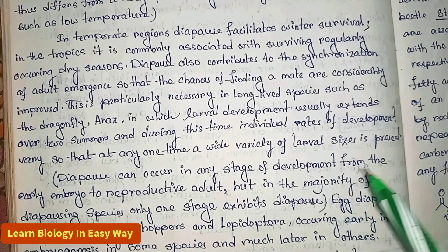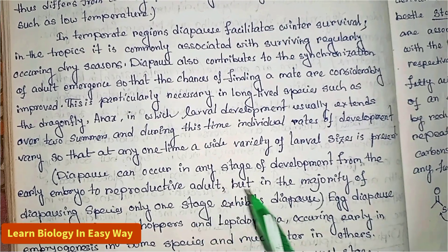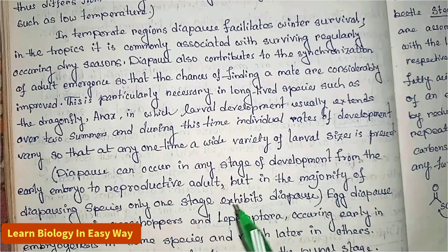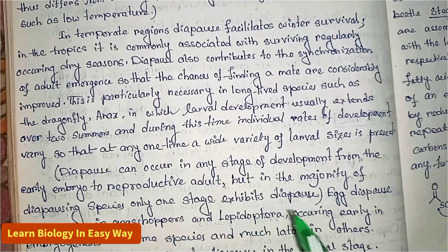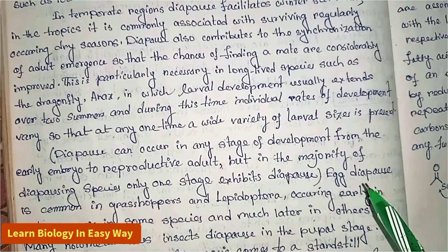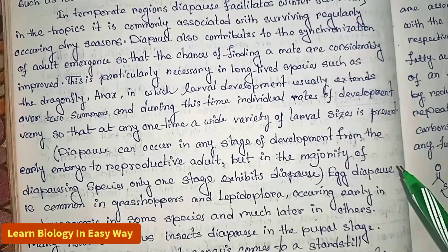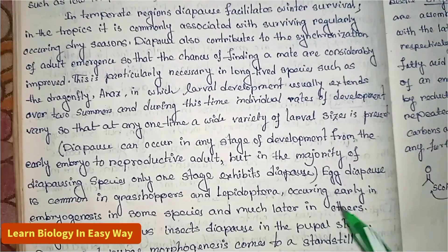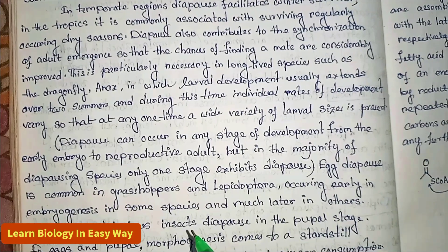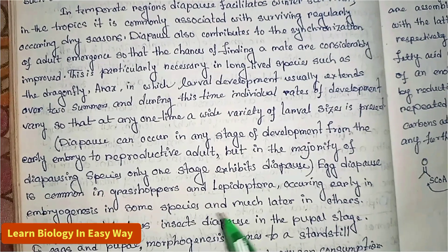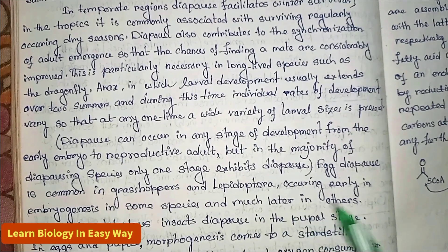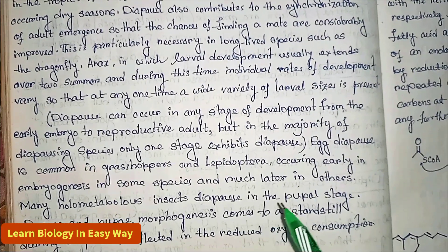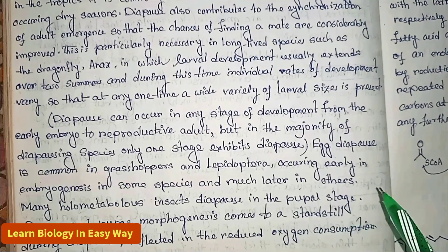In the majority of diapausing species, only one stage exhibits diapause. Egg diapause is common in grasshoppers and lepidoptera, occurring early in embryogenesis in some species and much later in others. Many holometabolous insects diapause in the pupal stage.